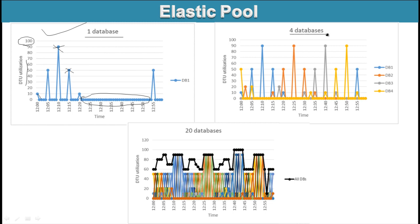In the next image, we can see four databases: DB1, DB2, DB3, and DB4. Within a single shared DTU utilization, we have created shared databases. The maximum reaches only 90 and the rest stays within the limit. If we consider 20 databases, the utilization goes a little bit over 100, as seen in this case.